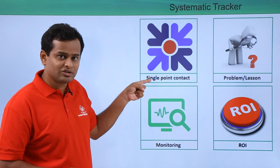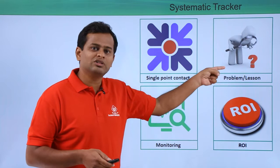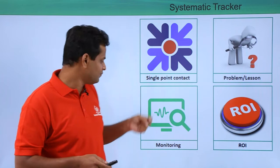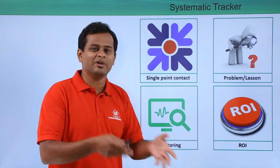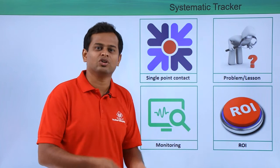Regarding the systematic tracker, there should be a single point of contact for the complete lessons learned management system. The problem or lesson identified needs to be addressed in one particular area, and then we need to constantly monitor it until it is executed and starts giving benefits. We then need to understand those benefits through ROI calculation.